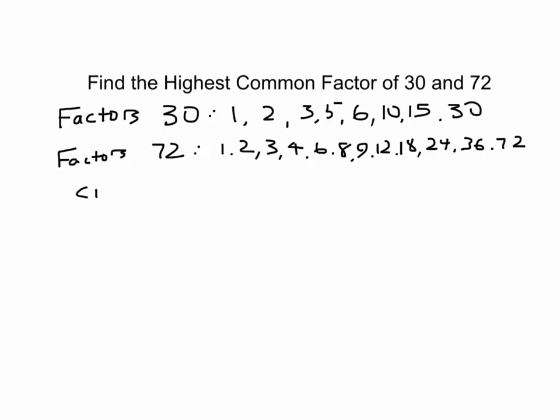So if you look at the common factors, they are 1, 2, 3 and 6 because they're in both. 1, 2, 3 and 6. And the highest common factor is just the largest number that's common, which is 6.